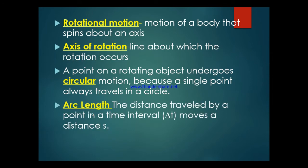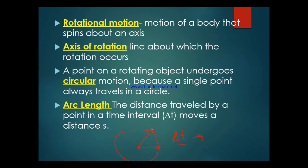Let me start from the term arc length. Rotational motion occurs around an axis and takes place like a circle. Take the center, and take the initial position where the object starts moving. At a certain point in time the object reaches a new position. The distance the object travels along the circle in that time — this distance — we call it arc length.